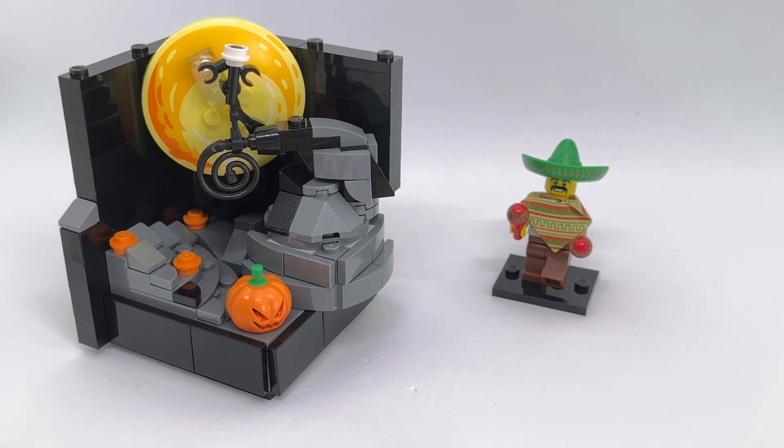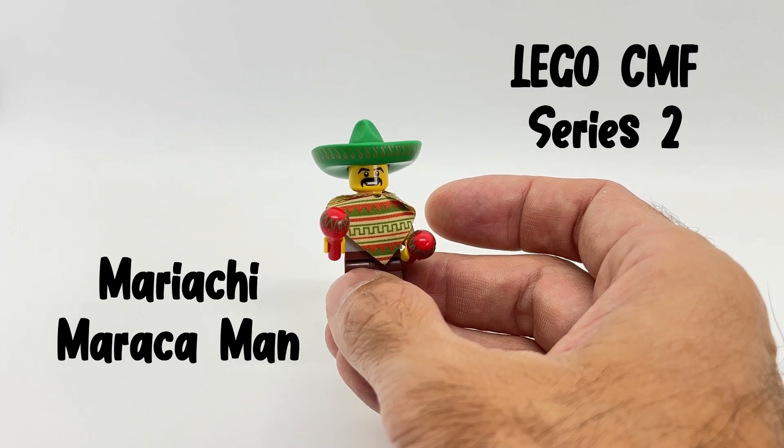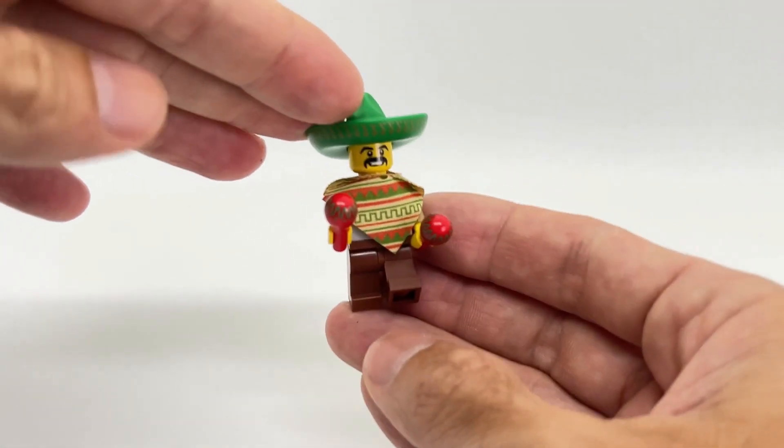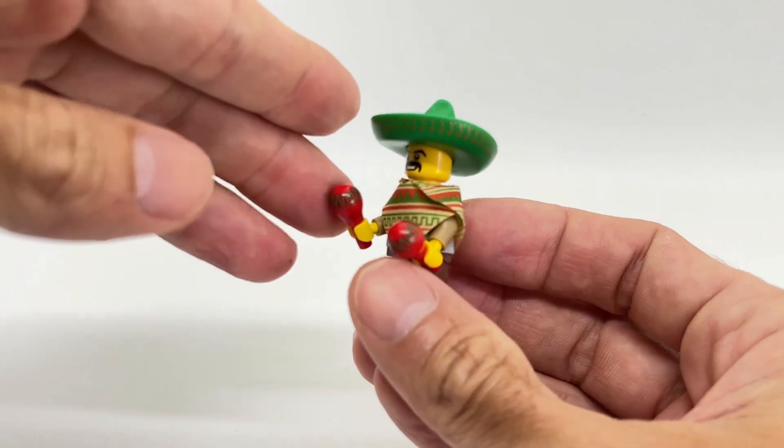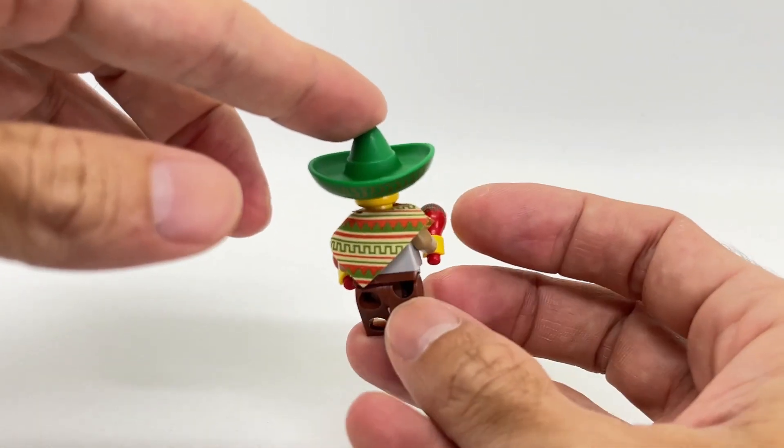The minifigure I chose is this Mariachi Maracca Man from the CMF series 2. Very cool minifigure that comes with two maracas, with a very nice printed poncho that can be used actually for decoration in other MOCs like sort of carpet or stuff like that.